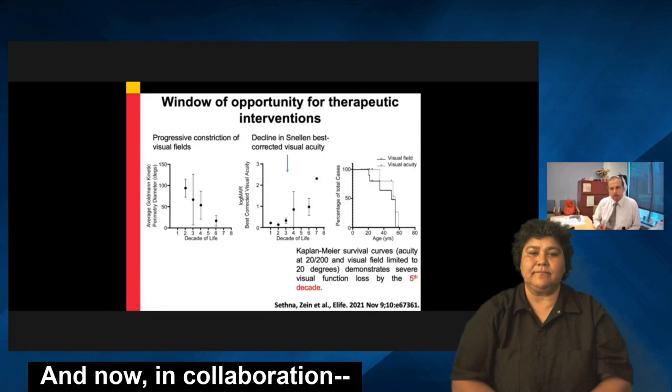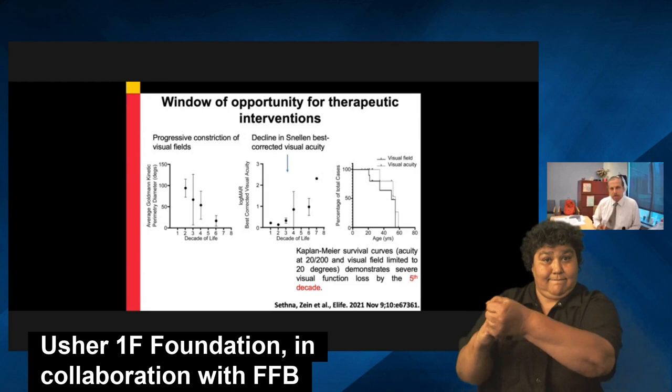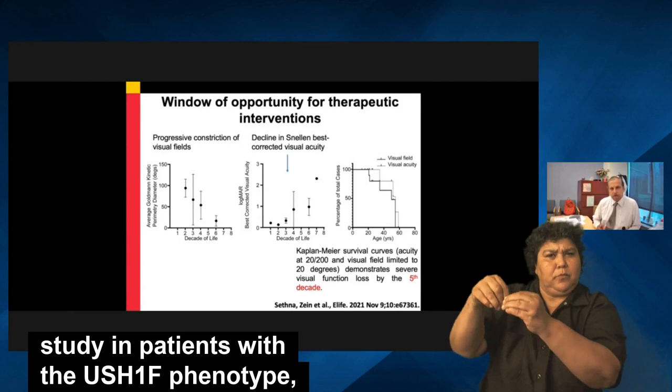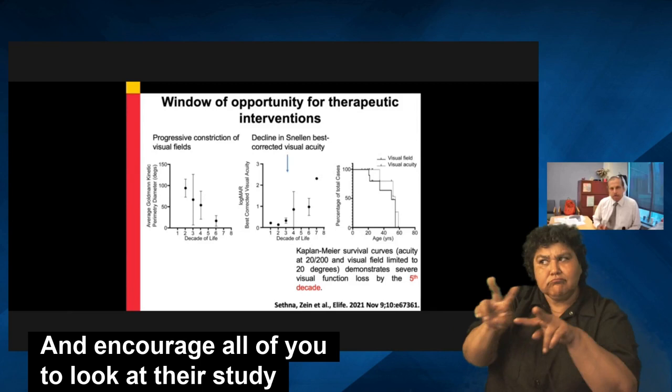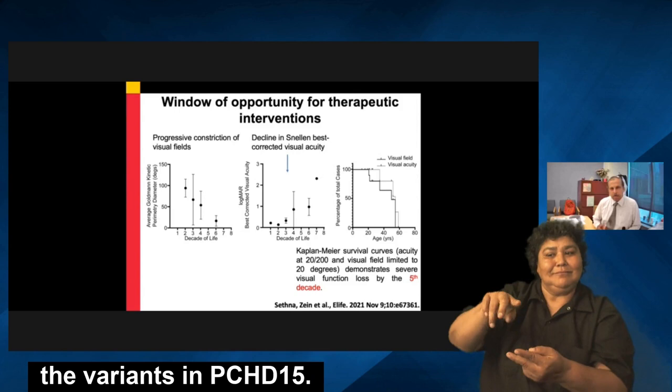Now, in collaboration with the Usher 1F Foundation and FFB, a more comprehensive natural history study is being conducted in patients with the USH1F phenotype. The study is enrolled as RUSH1F on ClinicalTrials.gov, and I encourage all of you to look at that study and consider participating if you know someone segregating variants in PCDH15.